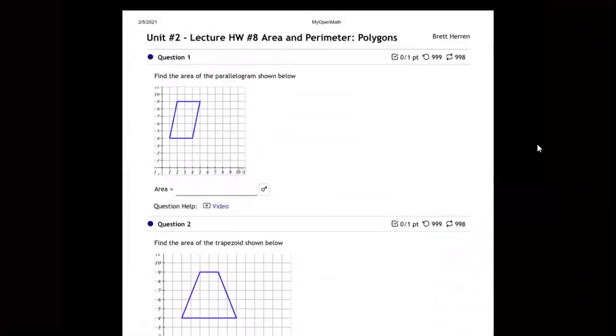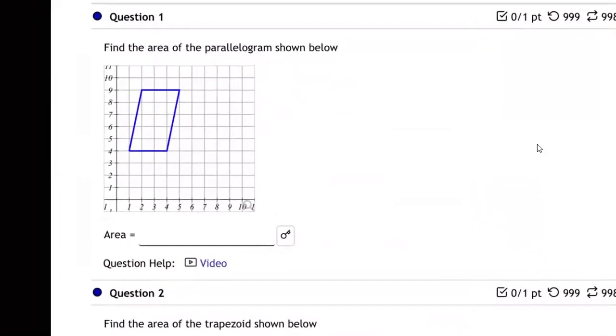So we can say area of a parallelogram is base times height. The question is, what's the base and what's the height? Well, we know the base. The base is always the bottom. So what exactly is that going to be?